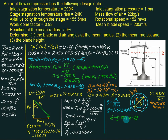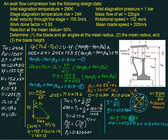Finally, we use the mass flow equation: ṁ = rho × pi × D × h × Vf. With ṁ = 22 kg/s, rho = 1.073 kg/m³, D = 0.43 m, and Vf = 155 m/s, we solve for blade height h. We get h = 0.098 meters, which is very close to 0.1 meters, or approximately 10 cm.